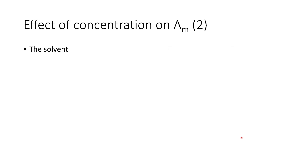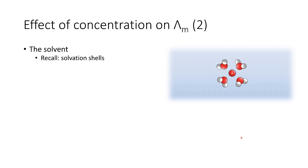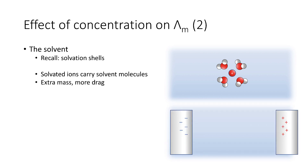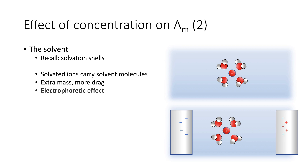The next effect involves the solvent. Remember solvation shells — around a central ion the solvent organizes itself into a solvation shell. Whenever an ion in solution is solvated and it migrates, it carries the solvent molecules with it, giving it more mass and increasing the drag in solution. As it migrates towards the oppositely charged electrode, it's held back more by the solvent. This is called the electrophoretic effect, informally termed solvent drag.